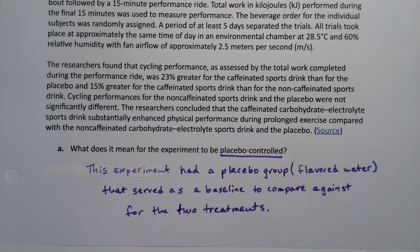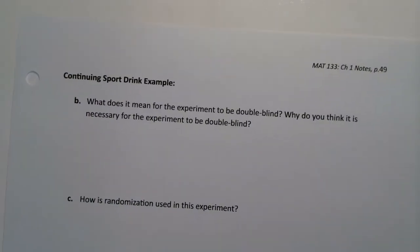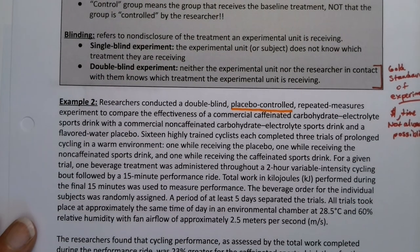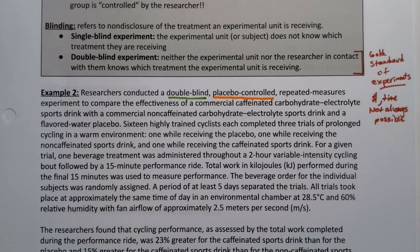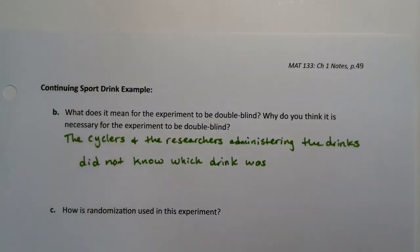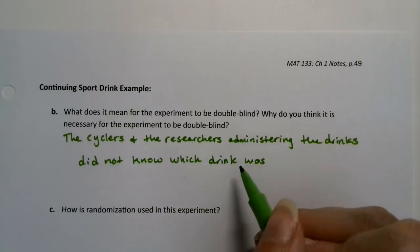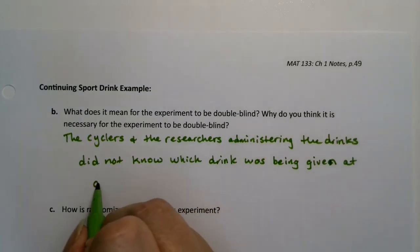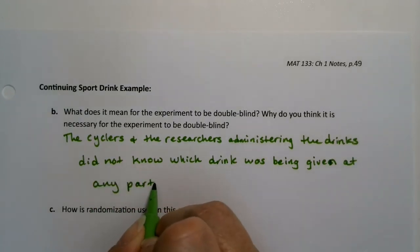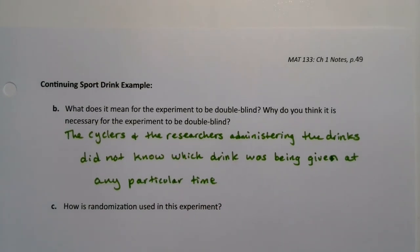Then we can see: does having these two types of sports drinks make you perform significantly better? What does it mean for the experiment to be double blind? It means the cyclists did not know what drink they were getting, and the person giving it to them did not know either. Somebody knows, but it's not the people making that interaction. The cyclists and the researchers administering the drinks did not know which drink was being given at any particular time — they just say 'drink this' without knowing what they're handing out or receiving.